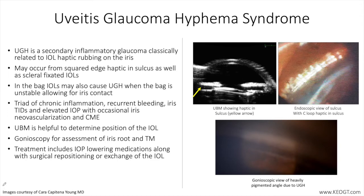Uveitis glaucoma hyphema syndrome, also known as UGH syndrome, is a secondary inflammatory glaucoma classically related to an intraocular lens haptic and/or optic rubbing on anterior chamber uveal and vascular structures, frequently involving the posterior surface of the iris and surrounding tissues. UGH syndrome is more likely to occur when squared-edge haptics, a design feature of most single-piece acrylic lenses commercialized today, are placed in the sulcus.